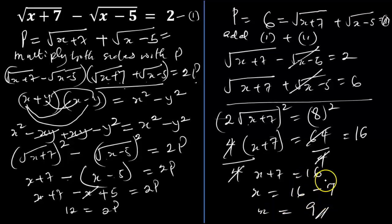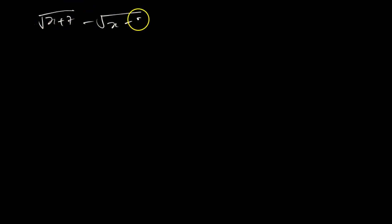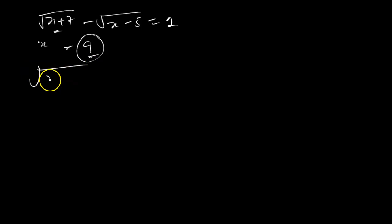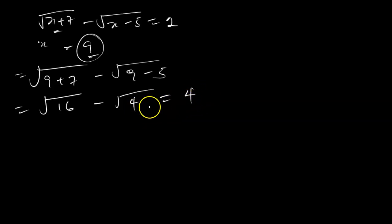Our answer is x equals 9. This method using conjugates is easier than the factorization method we used in the last lesson, and with conjugates you can solve any radical equations. Let's verify: substituting x equals 9 into the root of x plus 7 minus the root of x minus 5, we get root of 16 minus root of 4, which is 4 minus 2, equals 2. The answer checks out. Thank you and have a very lovely time.